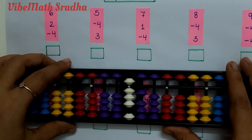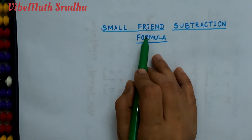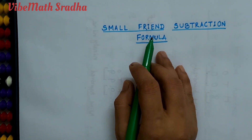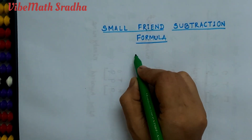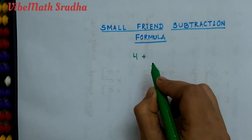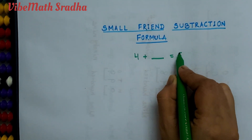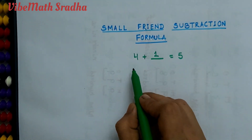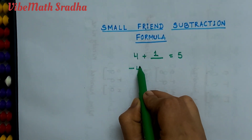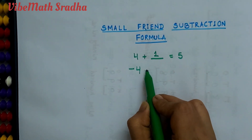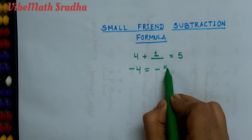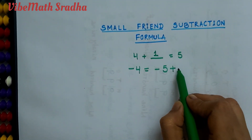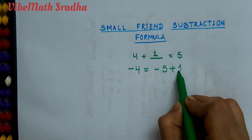Let us derive this formula first. What are small friends? Small friends are the numbers which we add up to a total of 5. So 4 plus how much equals to 5? 4 plus 1 equals to 5. So if we need to subtract 4, we have to subtract 5, then add the small friend of 4, that is 1.